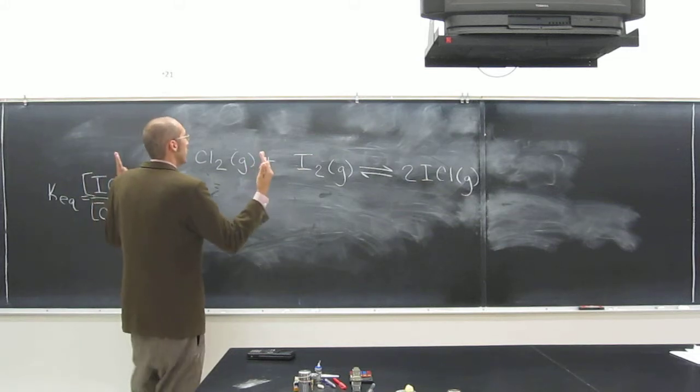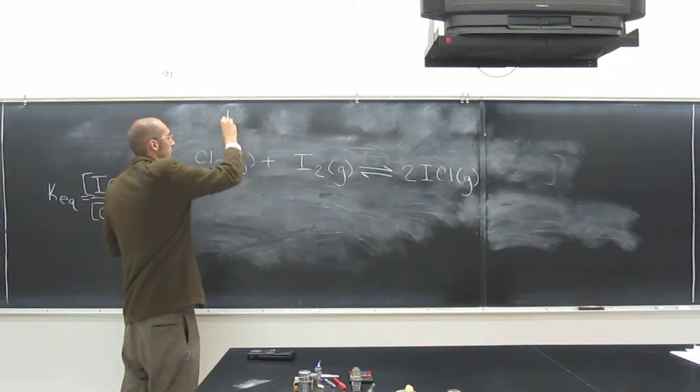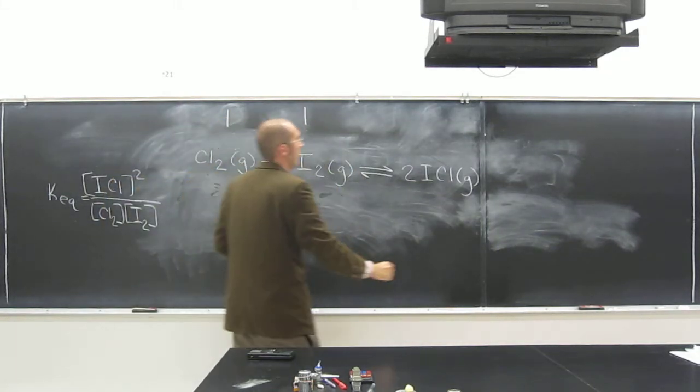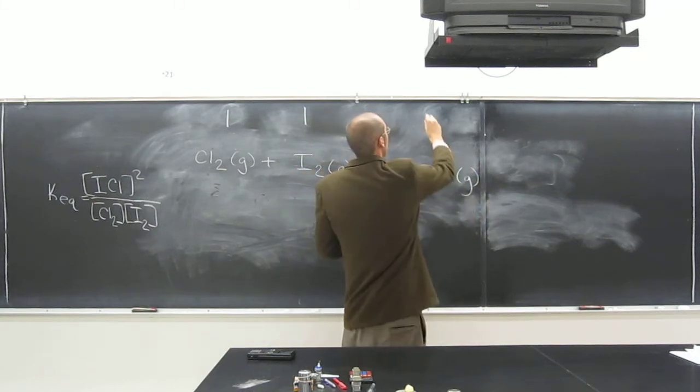So, how many moles of chlorine gas do we have in this reaction, relatively? One. And how many moles of iodine gas? One. And how many moles of ICl? Two.